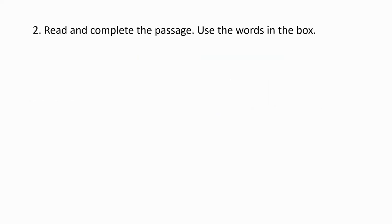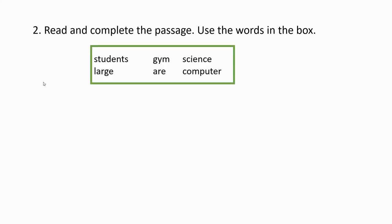Number two: read and complete the passage. Use the words in the box: Students, Large, Gym, Are, Science, Computer. These are all the words you are going to use to complete the passage. You have five seconds before I move on to the next sentence. If five seconds is not enough, you can pause the video and start it again when you are ready. I will give the answers after I finish reading all the sentences.